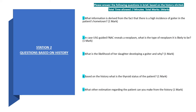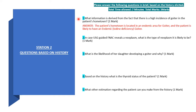Station 2 is a question based on the history. Total time is 7 minutes with 5 marks. Question 1: What information is derived from the fact there is a high incidence of goiter in the patient's hometown? The answer is the patient's hometown is located in an endemic area for goiter, and the patient is likely to have endemic iodine deficiency goiter.